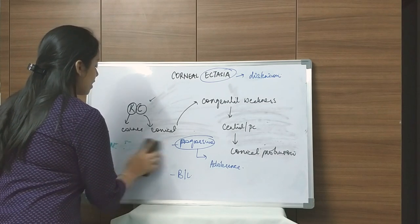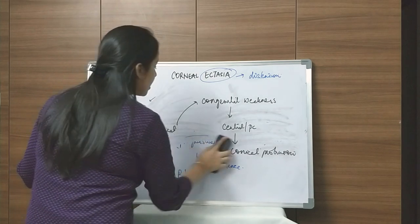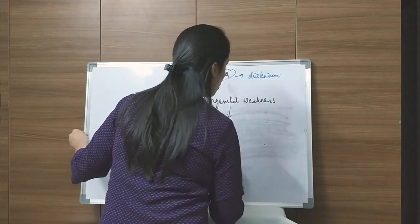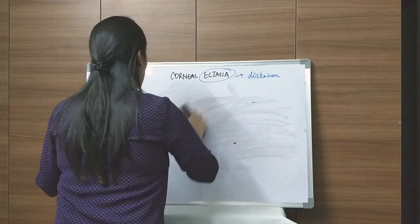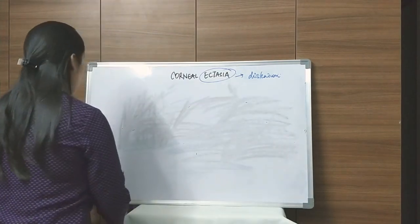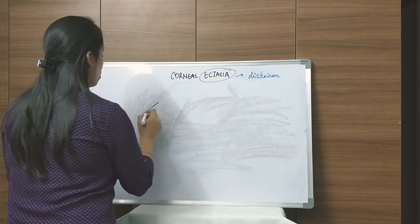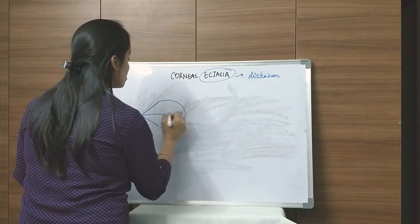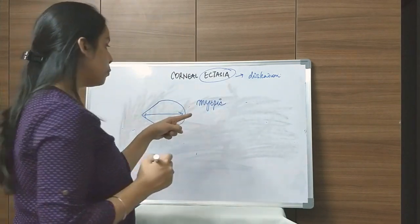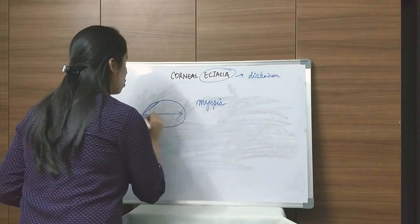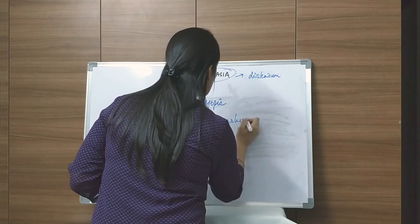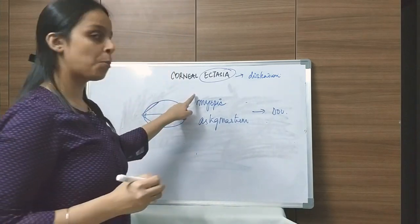When we are talking about keratoconus, how will the patient come to us? The patient will come with blurring of vision. Why does this blurring occur? As the cornea becomes conical, the overall axial length of the eye increases, so there will be a myopic shift in refraction. Also, as the curvature of the cornea becomes distorted and parabolic, because of this astigmatism and myopia the patient will come with blurring of vision.